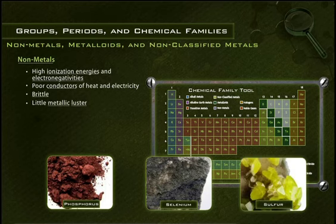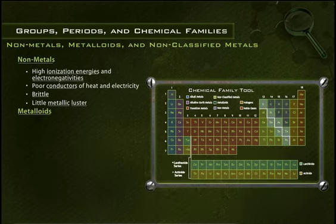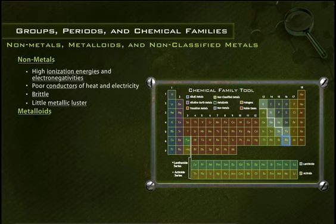Most nonmetals have the common ability to gain electrons easily, but display a wide variety of other chemical properties. Metalloids include boron (B), silicon (Si), arsenic (As), germanium (Ge), antimony (Sb), tellurium (Te), and polonium (Po).